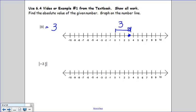On the next example, you have the absolute value of negative 2 and a half. So let's plot the number negative 2 and a half. Negative 2 and a half would be right between negative 2 and negative 3.